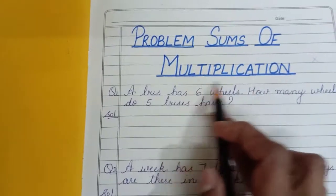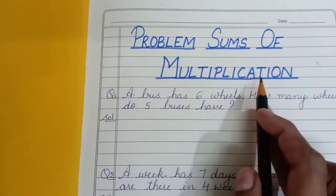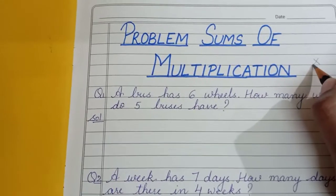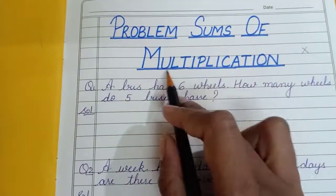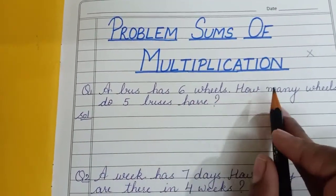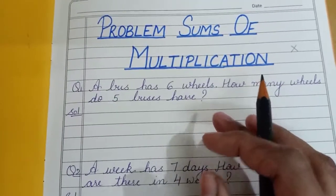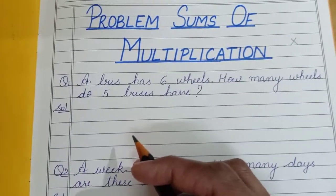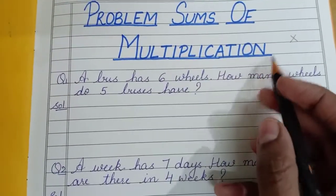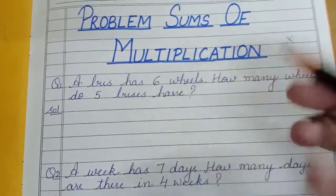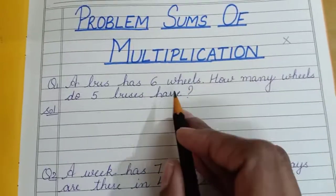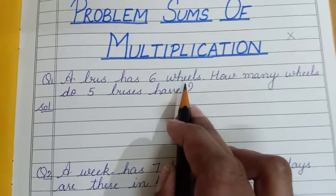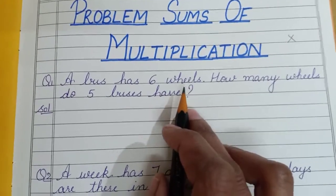Today we will do problem sums of multiplication. The sign of multiplication is this cross sign. Multiplication means to multiply — we are going to add a particular number many times. For making it easy, addition every time is not possible, so we are going to remember the tables. For this you need to know all the tables very well, then it will be easy for you.